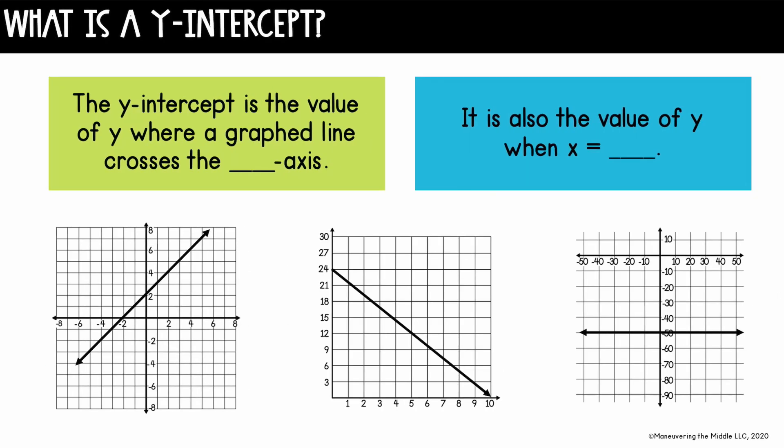Let's start with what is a y-intercept. Well, the y-intercept is the value of y where a graphed line crosses the y-axis. You can also think of it as the value of y when x is equal to zero.